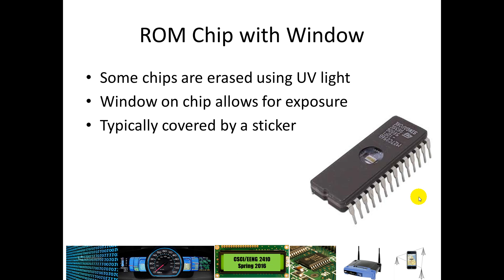This is an example of an old-style ROM chip. Notice the window on here — that's what allowed ultraviolet exposure. In the old days, you would program this by blanking it first: putting it in an ultraviolet bath, almost like a tanning bed for a chip. When you wanted to run it, you would put a simple sticker over the top to keep any UV light from blanking your data. When you wanted to rewrite it, you'd pull the sticker off, put it back in a UV bath, let it sit until completely erased, then put it into a socket to have it reprogrammed, and then put it back into your circuit.